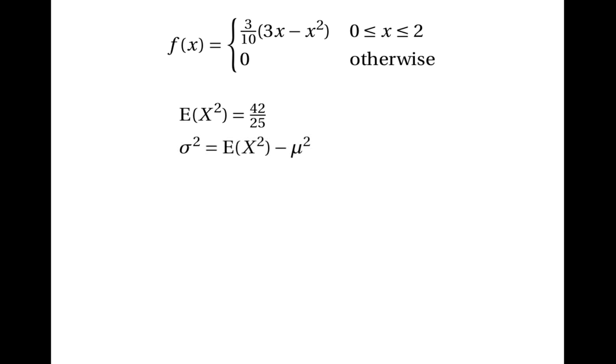That's the value of E[X²]. Remember that to find the variance we subtract the square of the mean, so the variance is 42/25 − (6/5)² = 42/25 − 36/25 = 6/25.